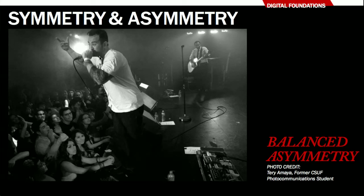Here our primary focal point is the singer, who is leaning towards the left side of the frame. Our secondary point of interest is the audience, so most of the activity and weight is on the left side. The right side doesn't hold much interest until we follow a line of wire back to the musician in the back — that's our counterpoint. We have more weight in front, balanced by the counterpoint in back. If that background musician were not there, I'd call this imbalanced asymmetry.